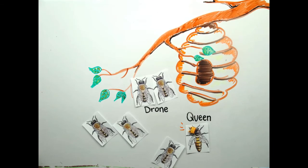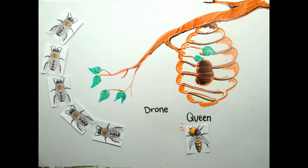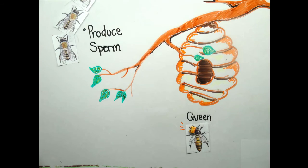The primary role of drone bees is to spread his genes by mating with the fertile female of a different colony.